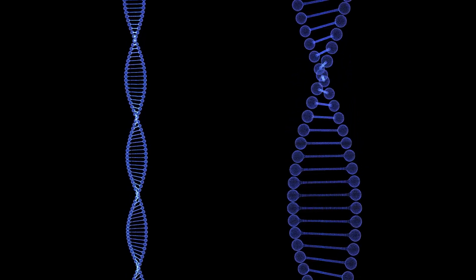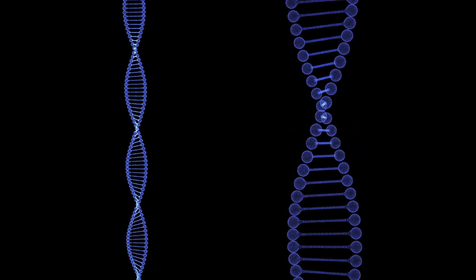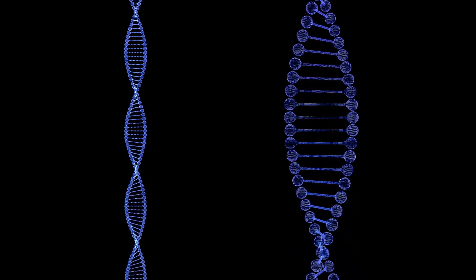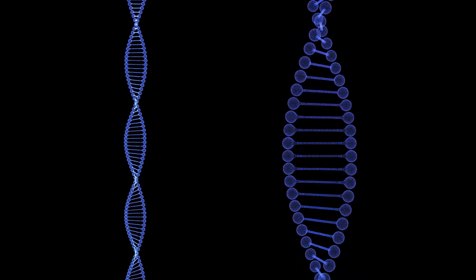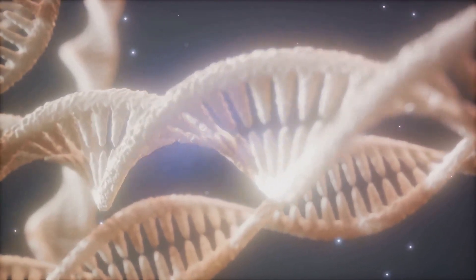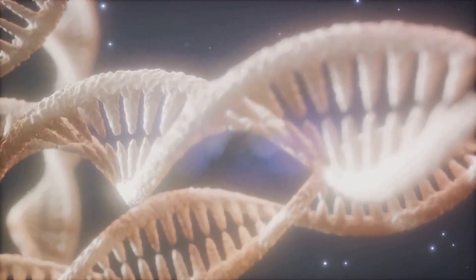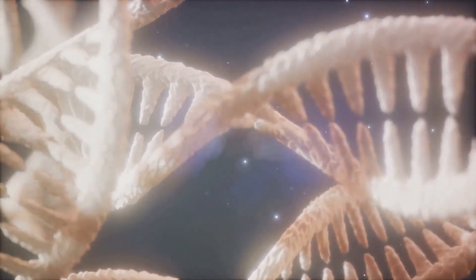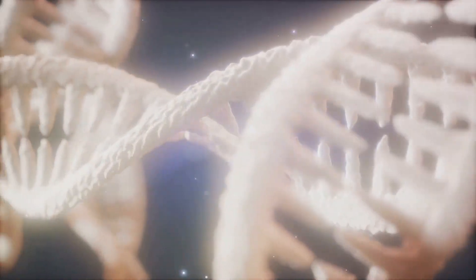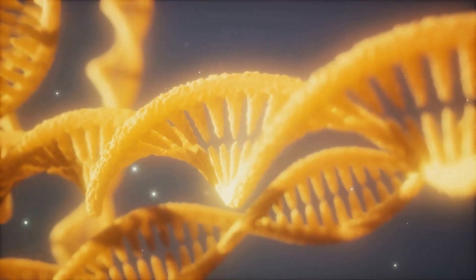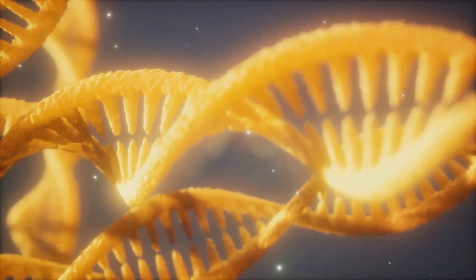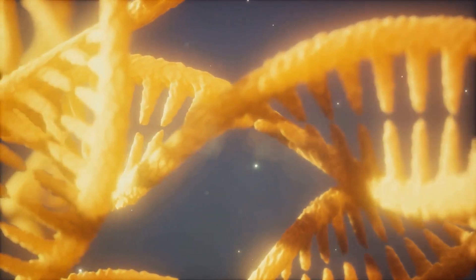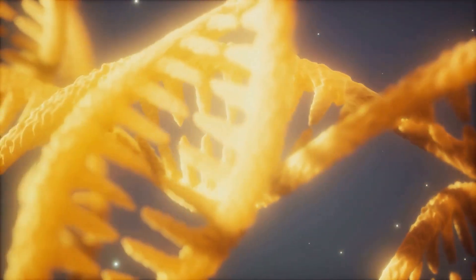DNA is made up of two strands twisted into a double helix. Along these strands are pairs of four different molecules, known as bases. These bases — adenine, thymine, guanine, and cytosine — pair up in specific ways to form the rungs of the DNA ladder. The order of these bases is what determines the information available for building and maintaining an organism.